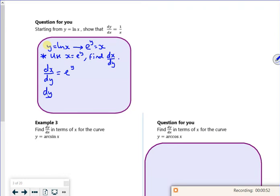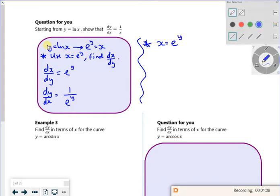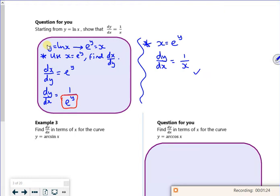So dy/dx is 1 over e to the y. So what I'm going to do is replace the e to the y on the bottom with an x. So what I get then is dy/dx is 1 over x and that's done it.